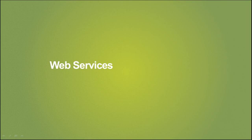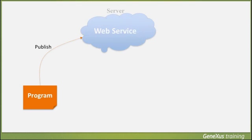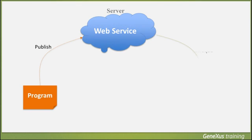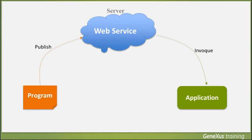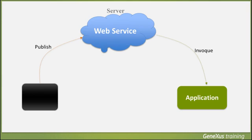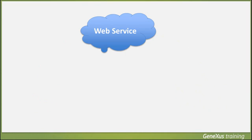Web services are programs that provide useful functionalities. They're provided to us, published on servers, so that we can locate and invoke them through a network that is usually the internet. Web services could be considered black boxes, because we ignore how they're internally implemented. But we need not be concerned with that aspect. The important thing is to be aware of the functionalities they offer, the parameters they require, as well as the elements they provide in return.